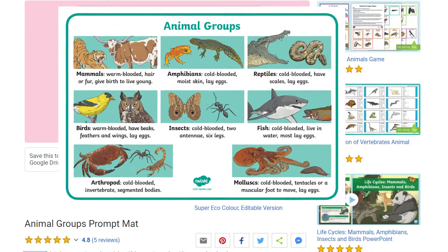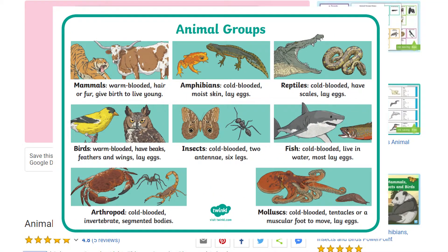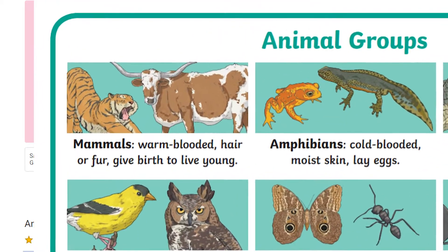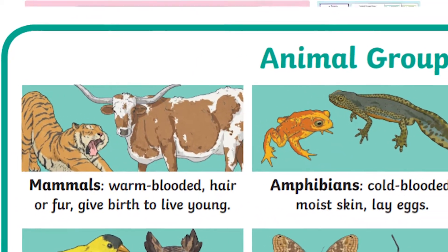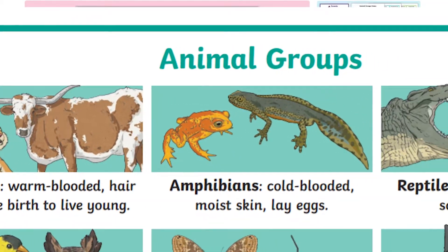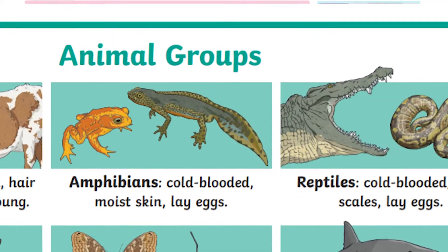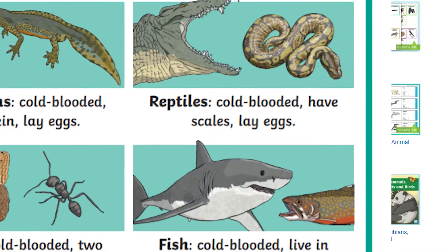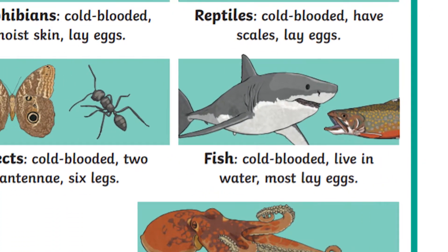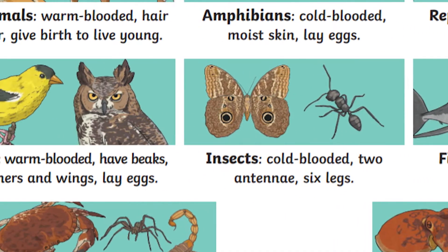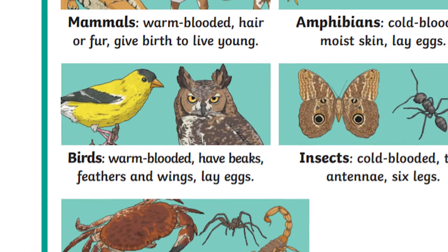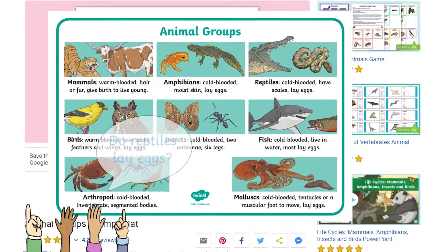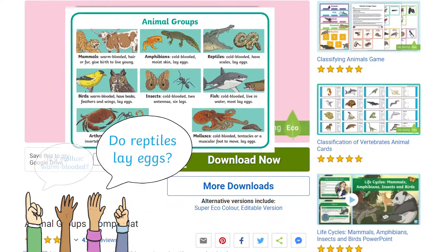The animal groups prompt mat can be displayed around the learning environment or used on desks as tabletop resources. It details all the features of the main animal groups. This is a great reference for children to have when they're completing classification activities and need support without always having to ask an adult.